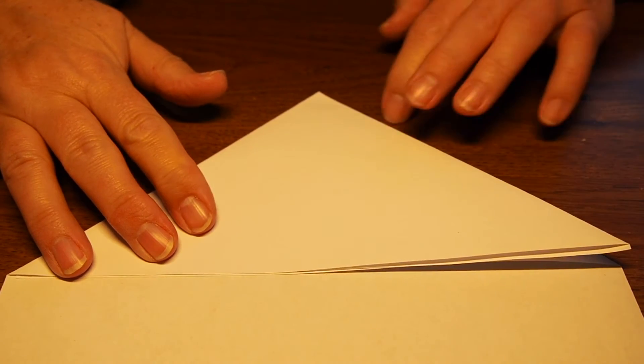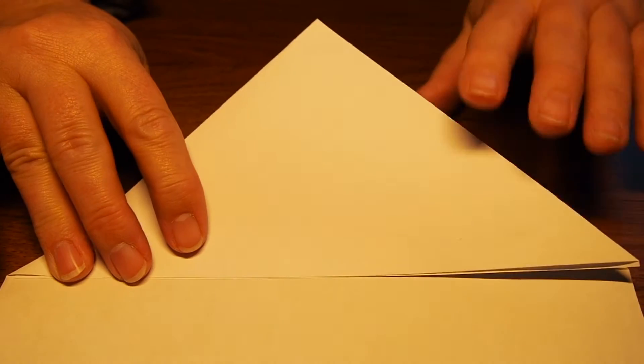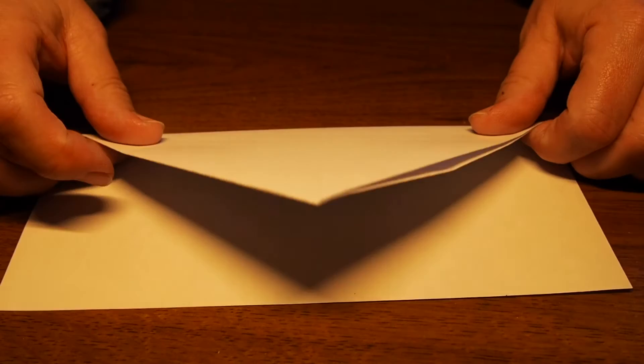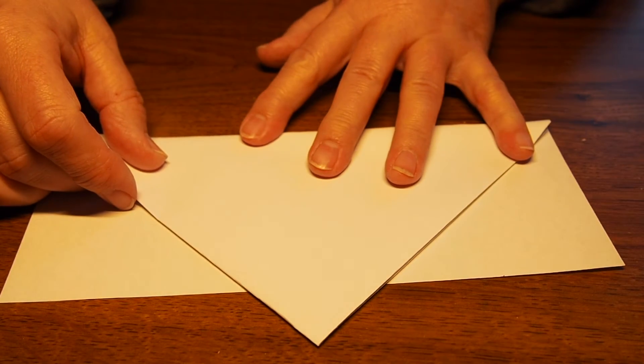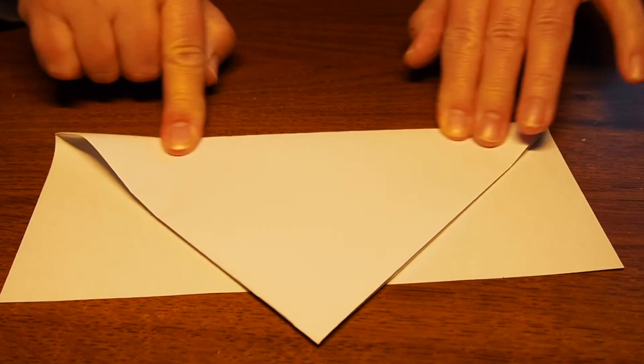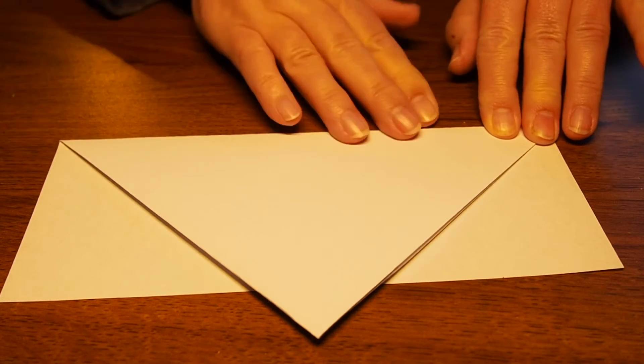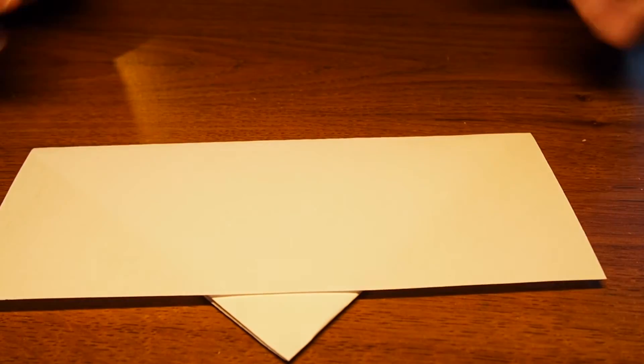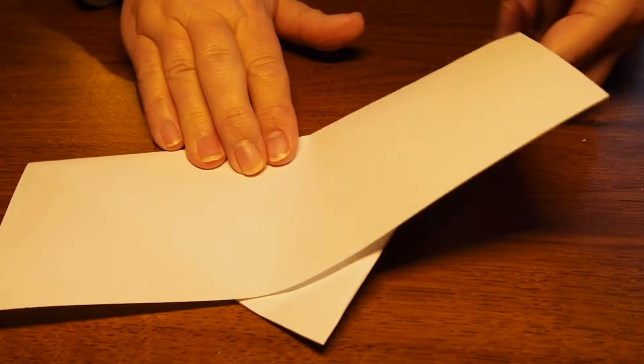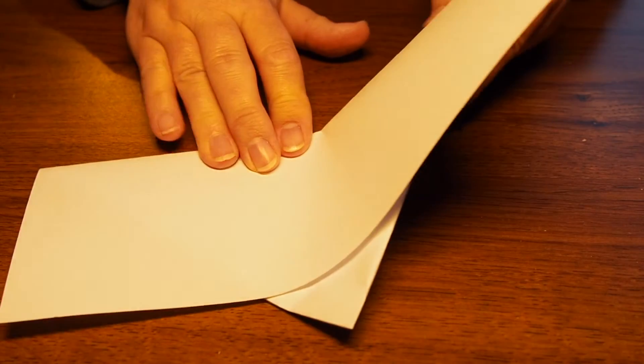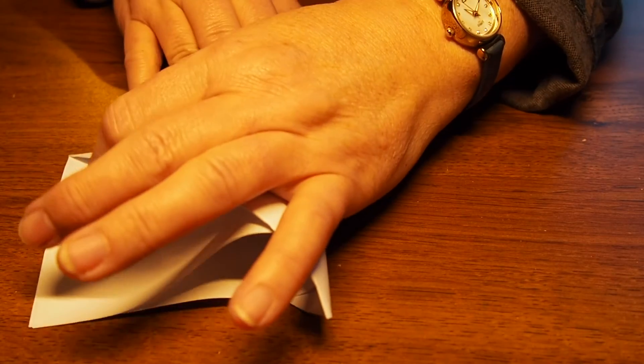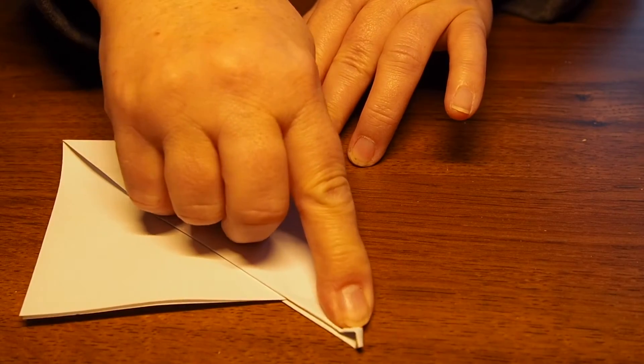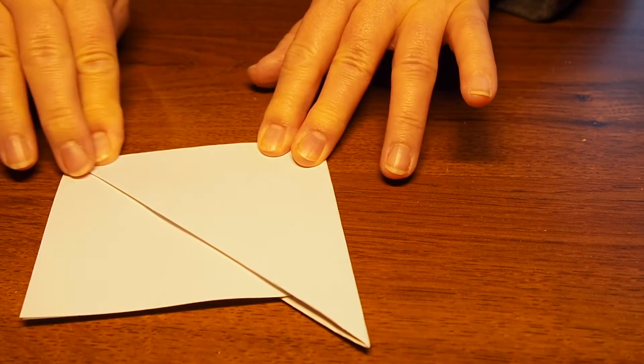You've got a shape like that, then you fold the point that you've just made up over the top of the paper so that it looks like that. Flip it over and take one side to fold it in half to make the other side like that and crease it.